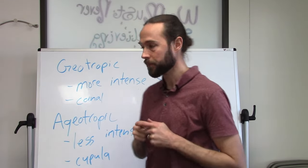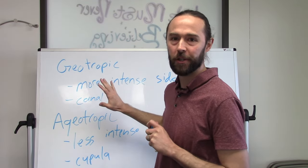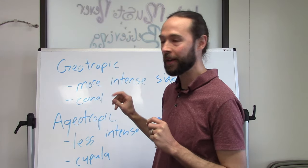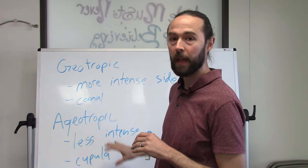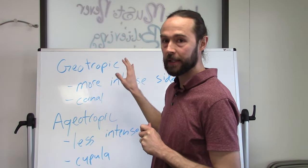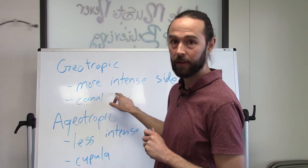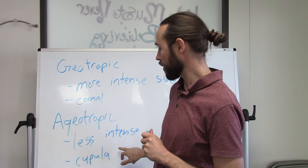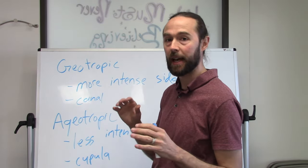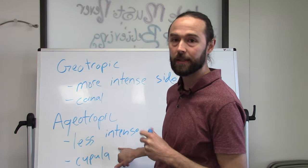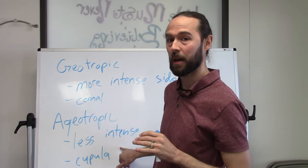To summarize: for geotropic nystagmus, the more intense side during the supine roll test tells you the affected side — crystals are in the canal on that side. For ageotropic nystagmus, the less intense side tells you the affected side — crystals are stuck on the cupula on that side. It's confusing, even for me sometimes, so keep those rules clear and comment below if you have questions.